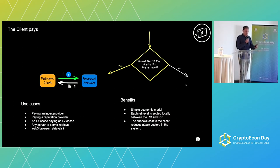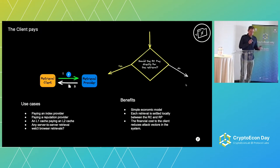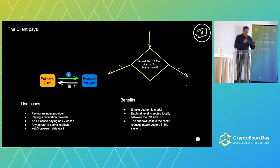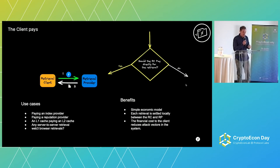There are some use cases for when a retrieval client might pay directly. Perhaps if we want to incentivize index providers to join the network around the world, we could pay for indexes with microtransactions, or pay a reputation provider, or have an L1 cache node in a CDN paying an L2 cache node. All these are server-to-server retrievals, where it's much easier for the retrieval client to have a wallet set up and make micropayments.